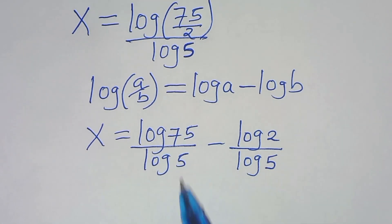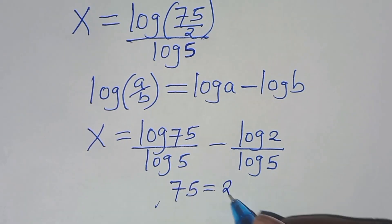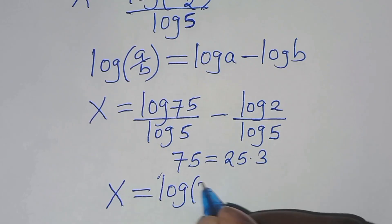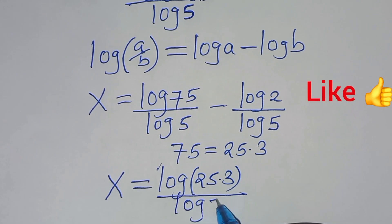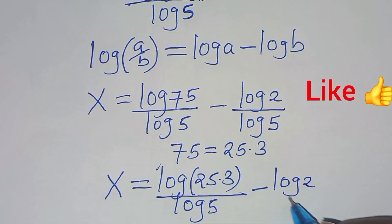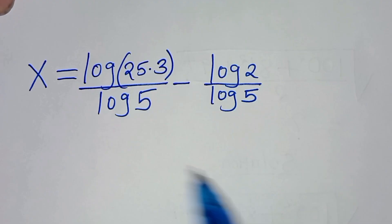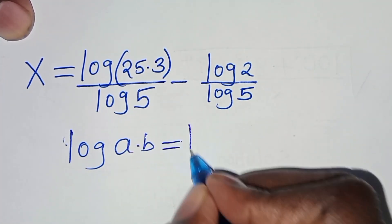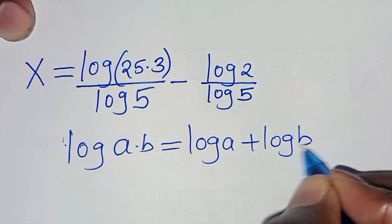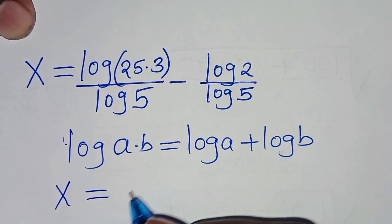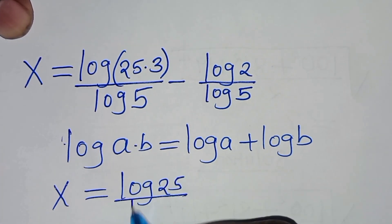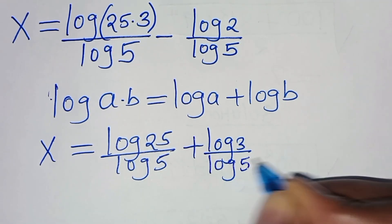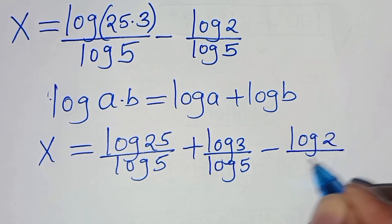Next, we express 75 as 25 times 3 and substitute: x equals log(25×3) divided by log5, minus log2 divided by log5. Since log(25×3) is in the form log(a·b) = log(a) + log(b), we get x equals log25 over log5, plus log3 over log5, minus log2 over log5.